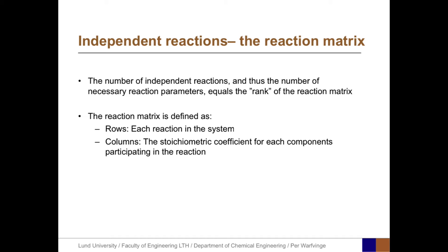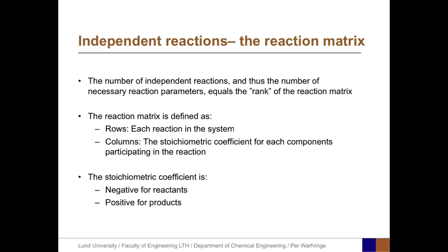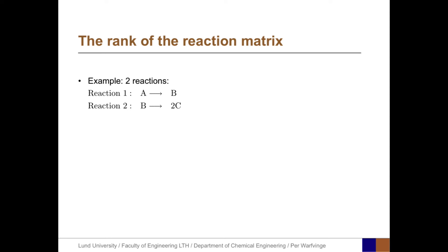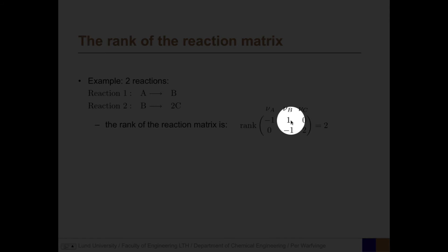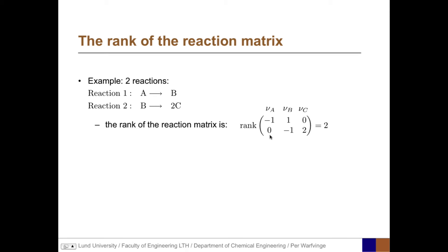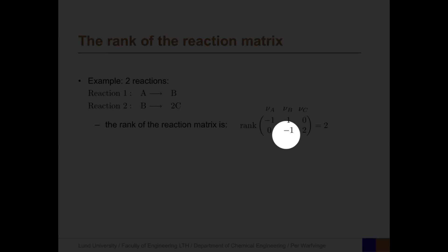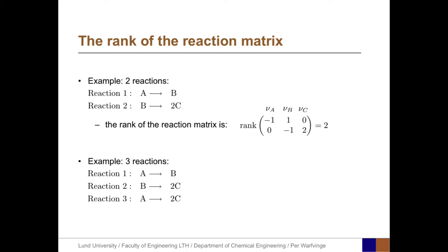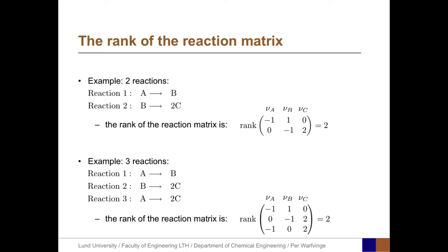The reaction matrix is defined with each reaction in the rows and the stoichiometric coefficients for each component in the columns. Stoichiometric coefficients are negative for reactants and positive for products. For example, with reactions A yields B and B yields 2C, the reaction matrix has rank 2. In a second example with three reactions, the rank of the reaction matrix is still 2, because one of the chemical reactions is not independent of the others.